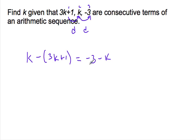So now I have an equation to find k. I just do some algebra here. I go k minus 3k minus 1 equals minus 3 minus k. Negative 2k minus 1 equals minus 3 minus k.